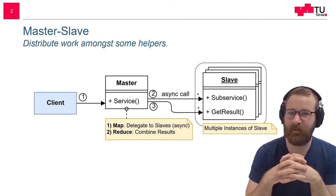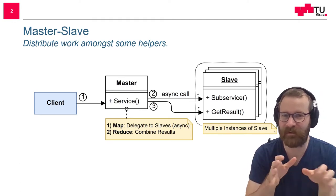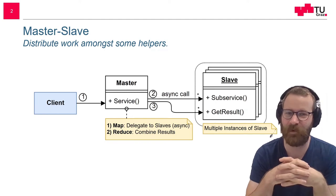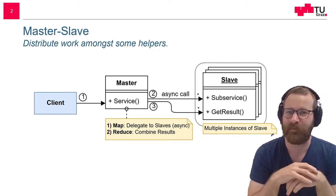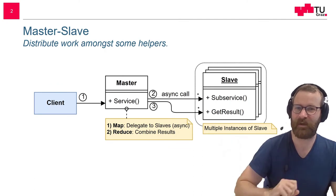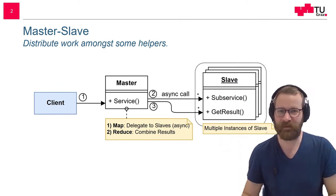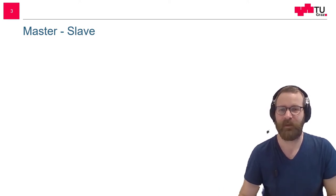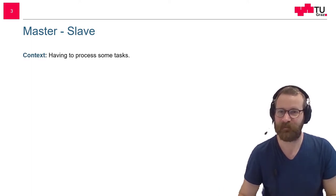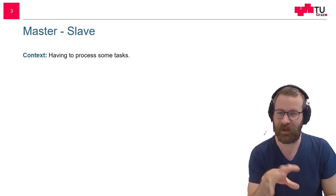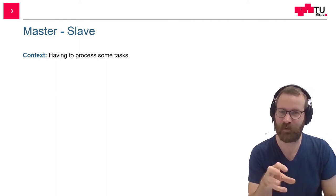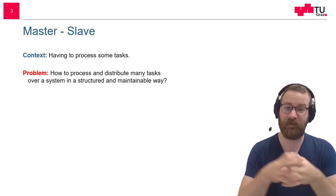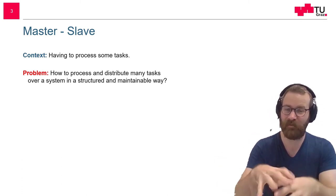You can also see that some kind of MapReduce idea is already woven into this design pattern. That's the basic structure. Now let's get into the context, problem, and so on. The context is that we have multiple tasks and we want to process them. So what is the problem? How can we distribute these tasks among our system?